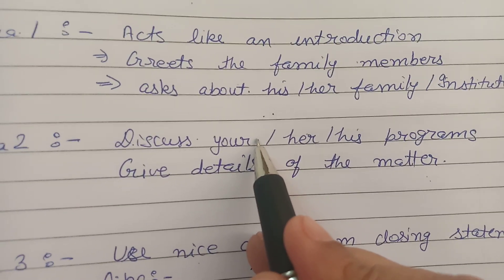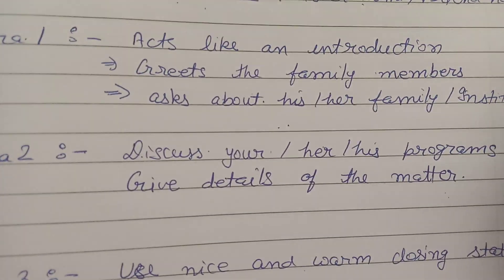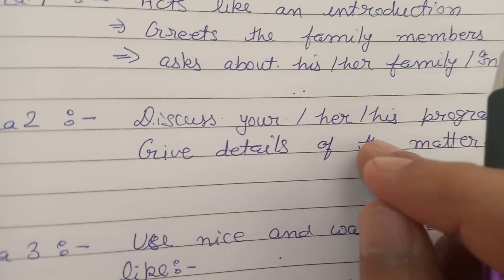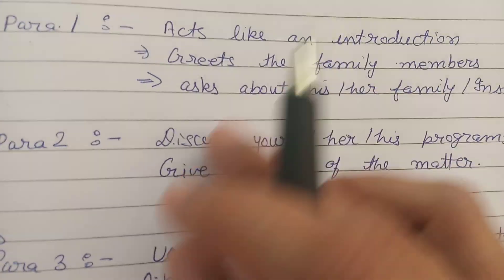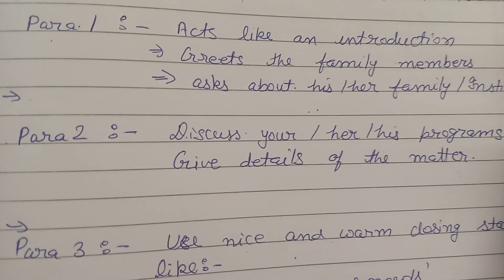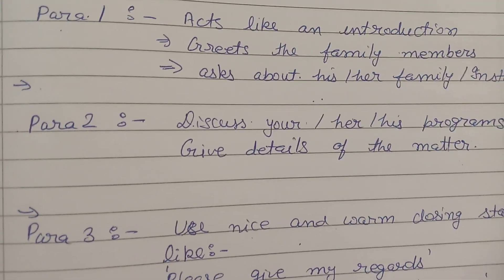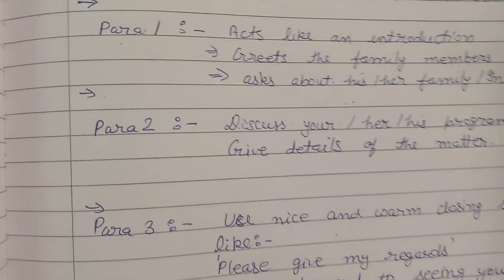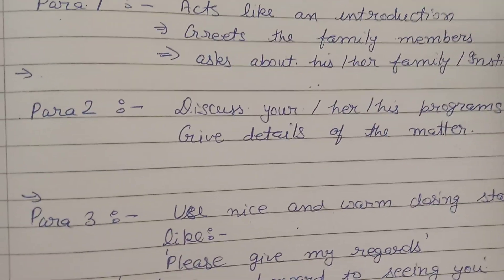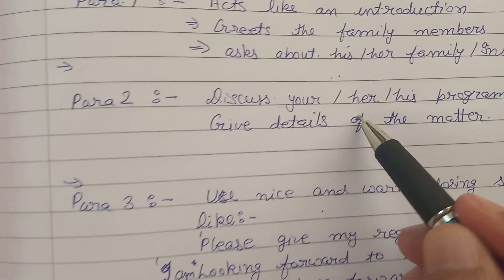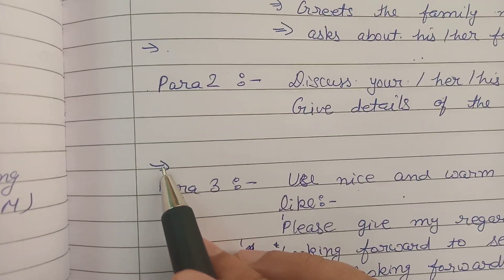In paragraph 2, you have to discuss your plans or the main subject matter. This is where you give the complete details of the matter. If you are organizing any program, discuss it fully here. If you are facing any problem, write about your problems. If you want to give a suggestion, you can give that in the second paragraph as well. After the second paragraph, leave one line blank.